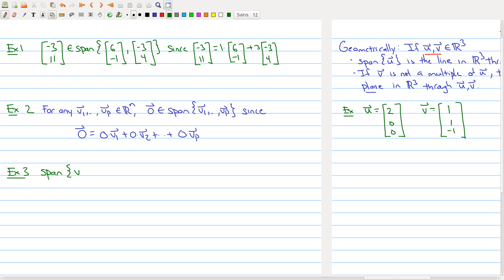We can say a little bit more. The span of v1 up to vp contains all scalar multiples of any particular vector vi. Why is that? Because c times that vector can be rewritten as zero times the first vector up to c times the vector vi and zero times the last vector.